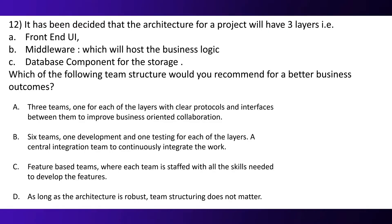Option A, 3 teams — one for each layer with clear protocol and interface between them to improve business-oriented collaboration. Option B, 6 teams — one development and one testing for each of the layers, with a central integration team to continuously integrate the work. Option C, feature-based teams where each team is equipped with all the skills needed to develop the features. Option D, as long as the architecture is robust, team structuring does not matter.